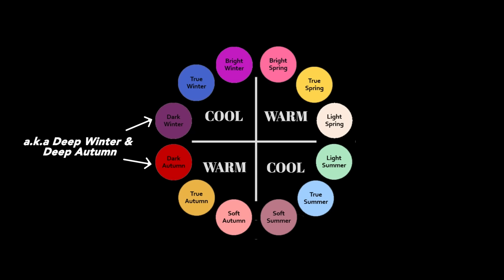In the 12-season system, deep and dark are words that are used interchangeably a lot of the times, but in a more segregated version of the system, they can mean different things. And I thought it would be an interesting topic to share with you today.